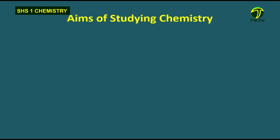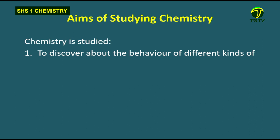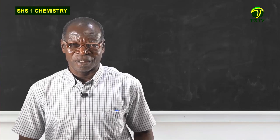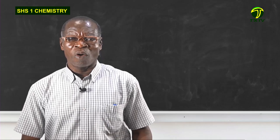Why do we study chemistry? There are three basic aims. The first aim is that we try to discover the behavior of different kinds of matter. As illustrated, when we put sodium chloride into water, kerosene, or naphthalene into water or kerosene — we observe what happens. So we try to discover about the behavior of different kinds of matter.